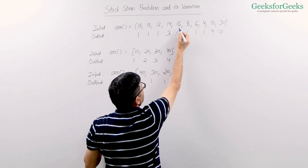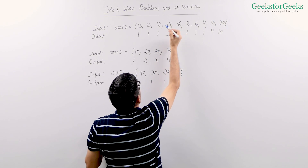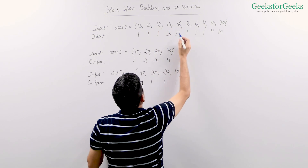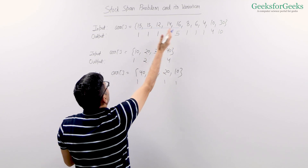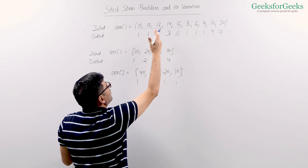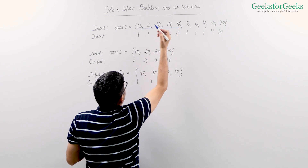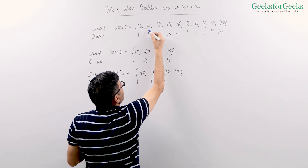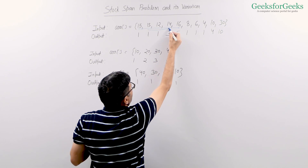Let's understand with this example. Say 16 is there. How many days just before it have smaller or same values? 1, 2, 3, 4, 5. That is why span of 16 is 5 because these five values contiguous on the left side including the current element have smaller or equal value. Let's see 14. How many days including 14 have smaller or same value? 3 days. So the span for 14 is 3.